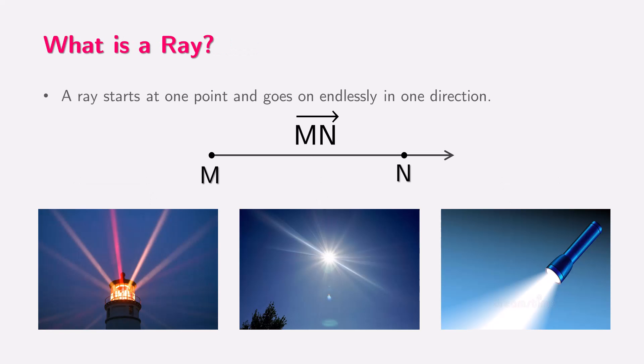Let's explore an exciting new idea in geometry: the ray. A ray is like a beam of light that starts at one point and stretches out forever in just one direction. Just like the light from a lighthouse, the rays of the sun, or the rays from a torchlight. In this case, point M is the starting point of the ray, and it continues through point N. Ready to dive into the world of rays?